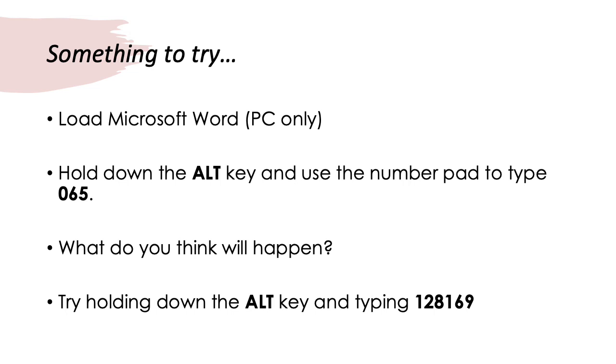It's also possible that you might want to try something so that you can see these character codes in action. If you have a Windows PC, you can load Microsoft Word. If you load Microsoft Word, get yourself a blank document. And then hold down the ALT key on your keyboard. And use the number pad. Not the numbers across the top of your keyboard. But the numbers on the actual number pad to the side. And then type in the code 065.